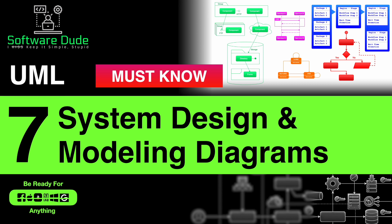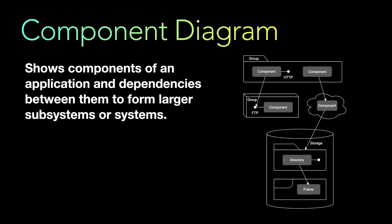We generally talk about architecture and component diagrams, and we are going to cover those, but there are seven different types of UML diagrams which we often neglect in our day-to-day studies. You can see how important these are when you are giving an interview or in your day-to-day job.